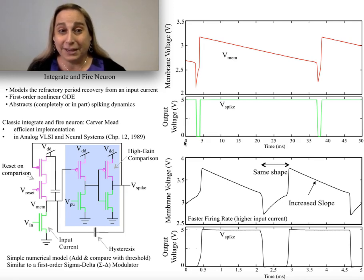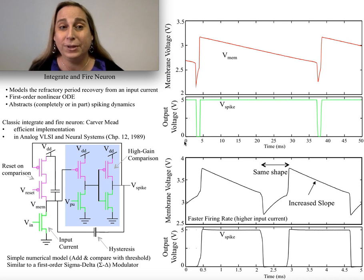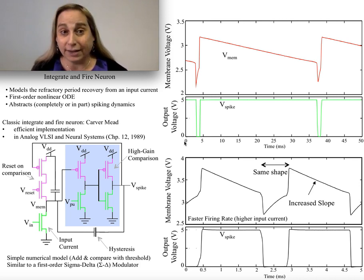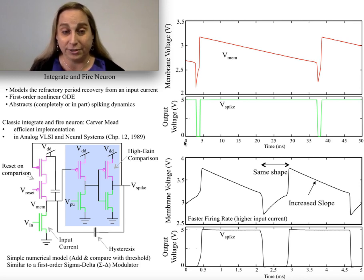I want to talk about what we often call the Integrate and Fire Neuron Model — just the very basic structure. This is one of those models that is extremely popular, extremely enthusiastic among those who think about computational neuroscience. It's very much a case of saying, look, I've got something that spikes, and somehow there's this view that once I've moved into spiking I've somehow moved into biological spaces.